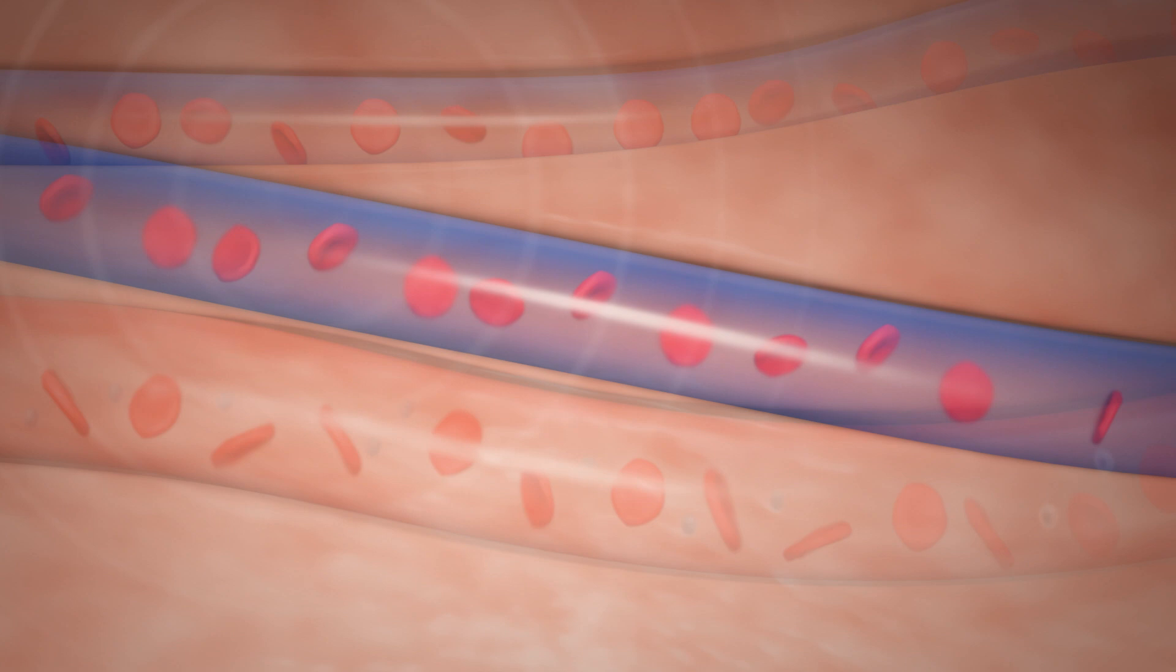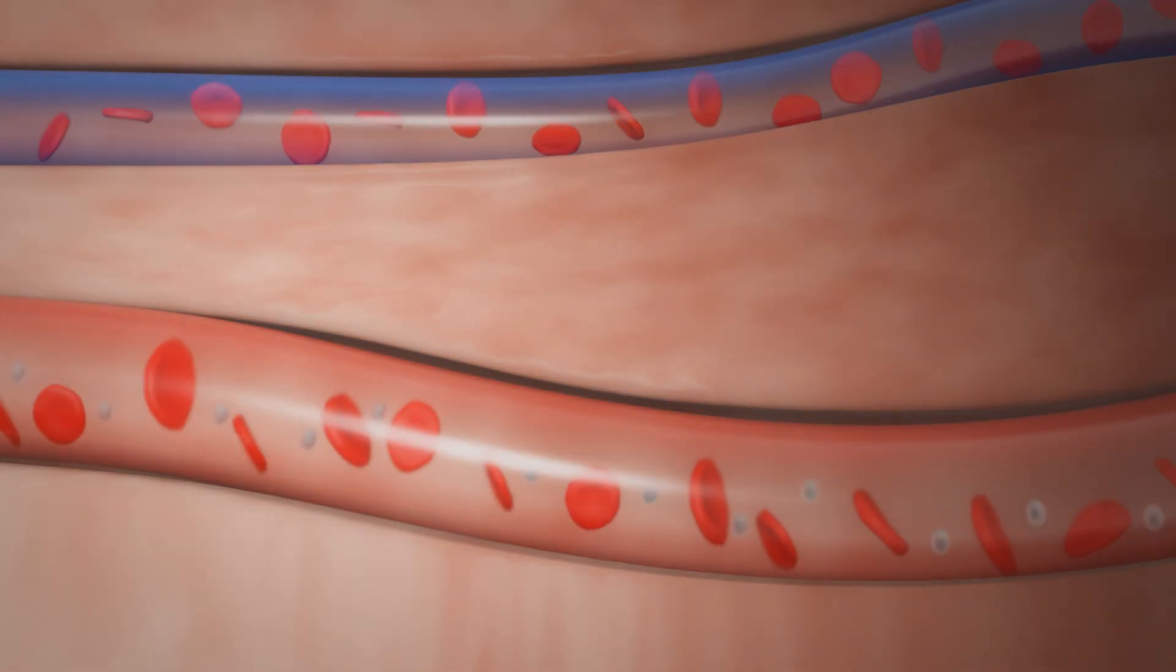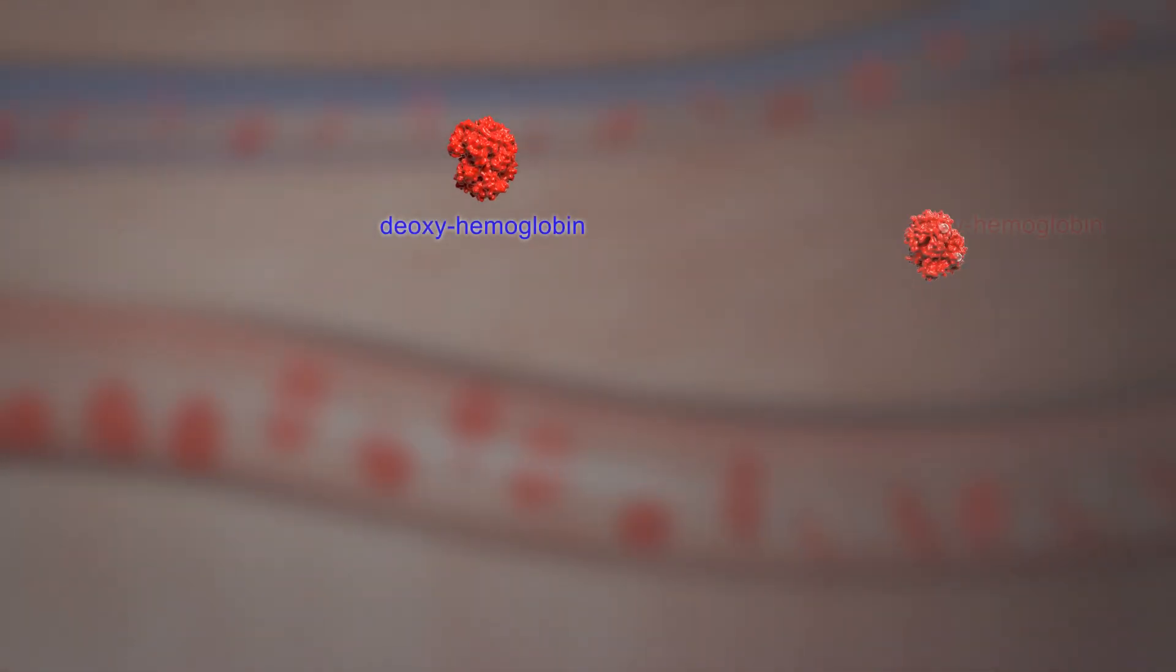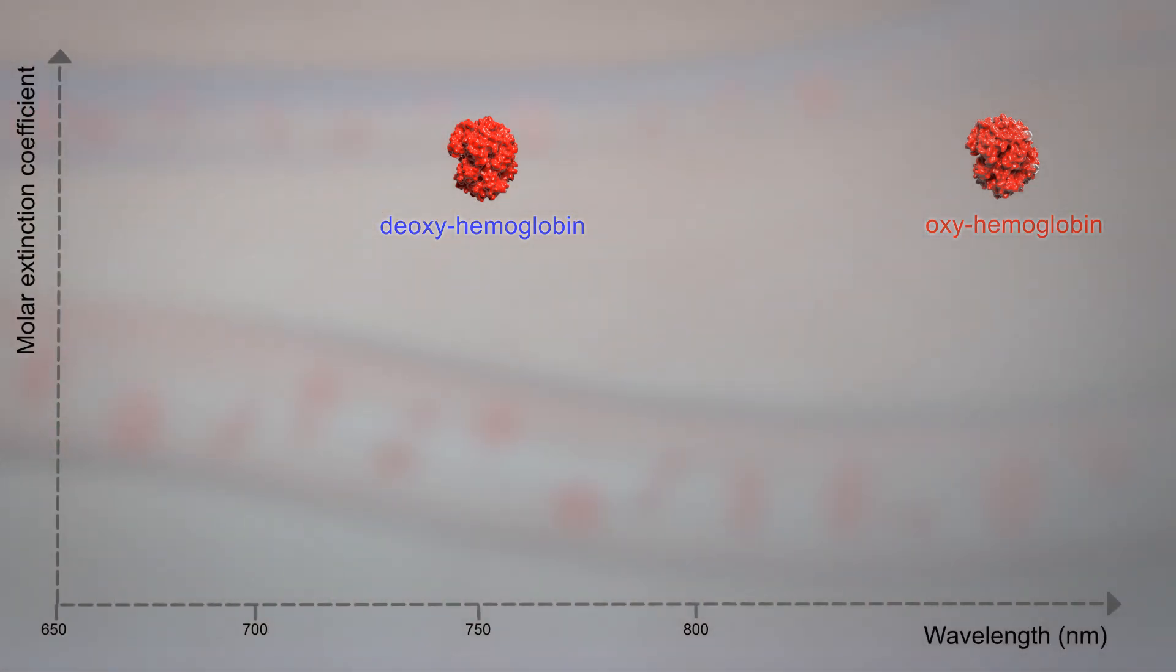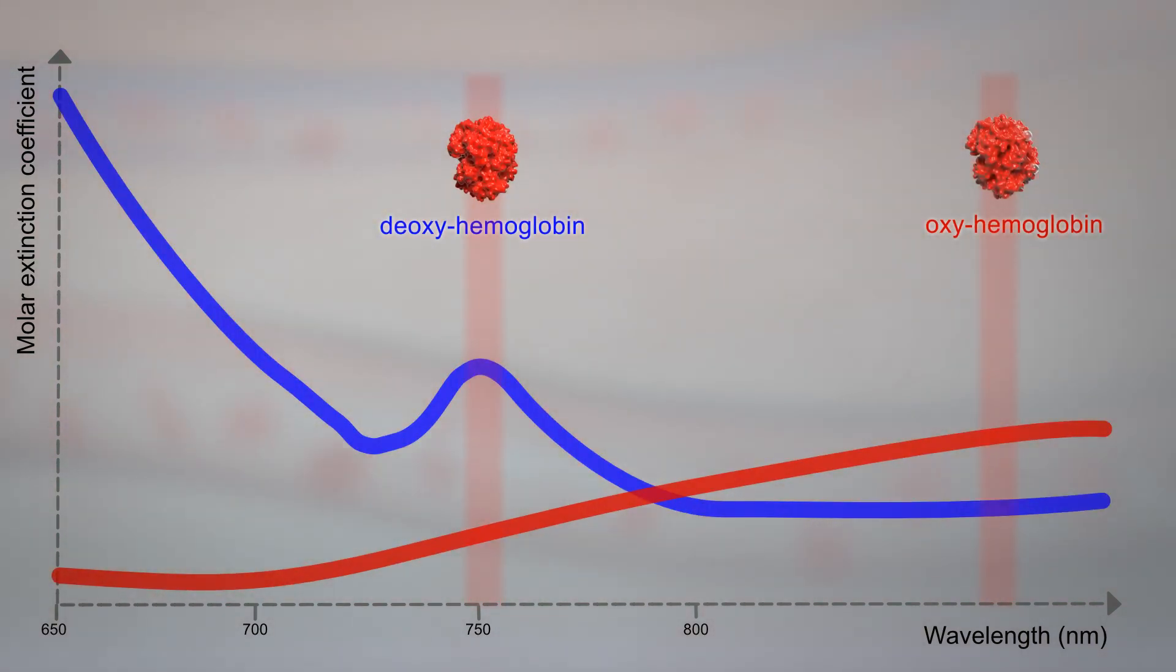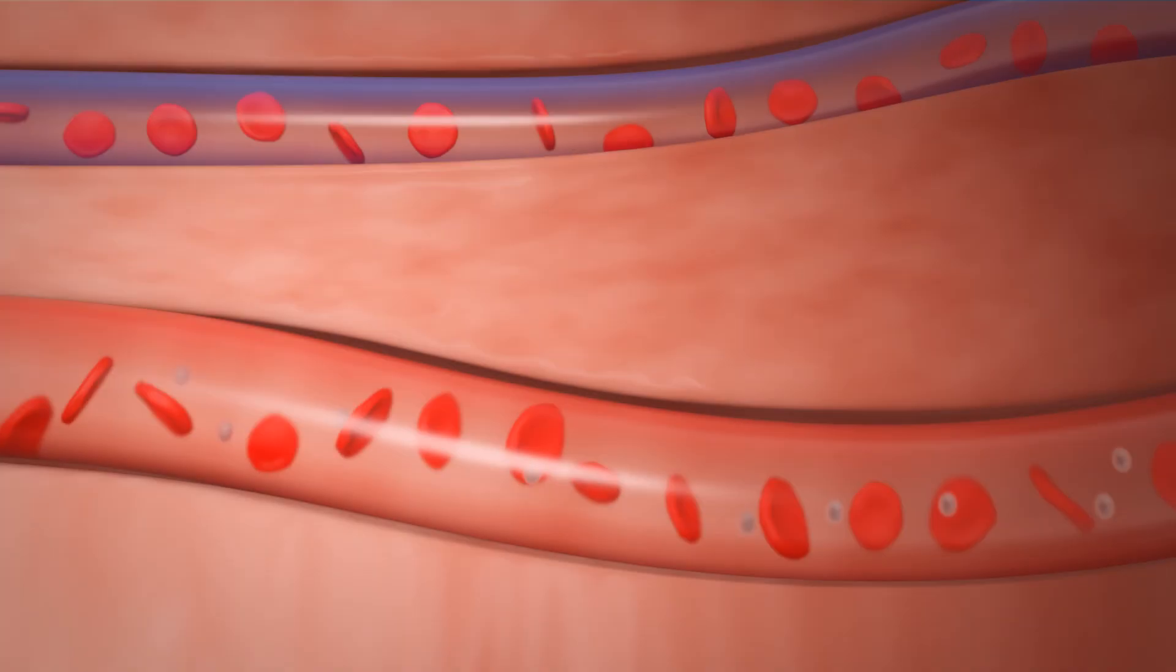In addition, to differentiate tissue chromophores, for example deoxygenated from oxygenated hemoglobin, light pulses of different wavelengths are used. Oxygenated and deoxygenated hemoglobin have unique absorption spectra, leading to wavelength dependent signal amplitudes.